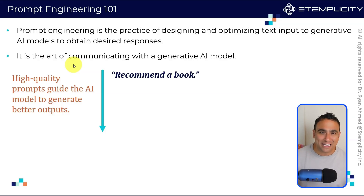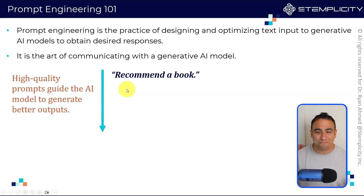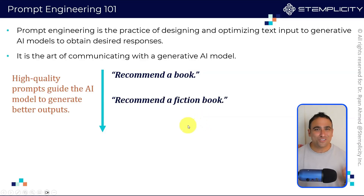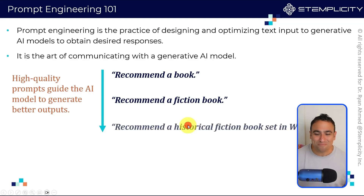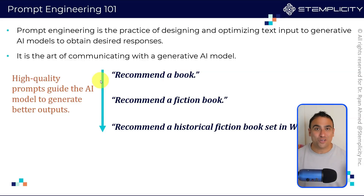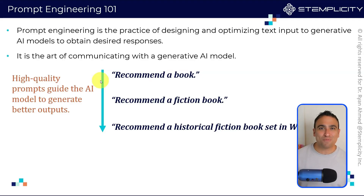Let me show you a quick example. Let's assume we would like to ask AI to recommend a book. You can say 'recommend a book,' or make it slightly better: 'I would like to recommend a fiction book,' or even better: 'Recommend a historical fiction book set in World War II.' Now you are giving the AI exactly what you want, and by refining your prompt, AI models will generate more robust, consistent outputs.